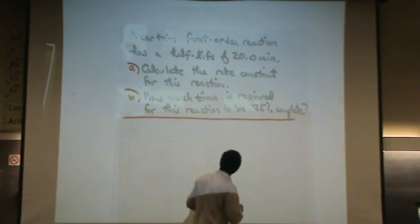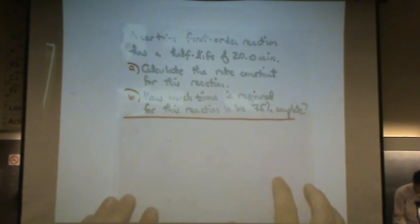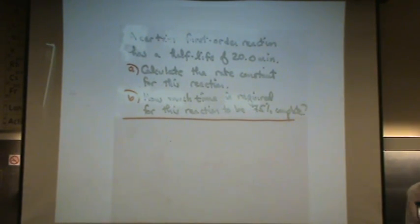Alright, a certain first order reaction has a half-life of 20 minutes. A, calculate the rate constant for this reaction. B, how much time is required for this reaction to be 75% complete.